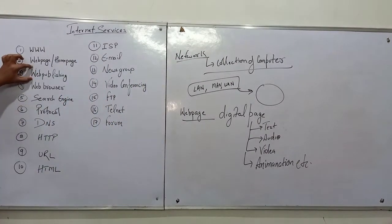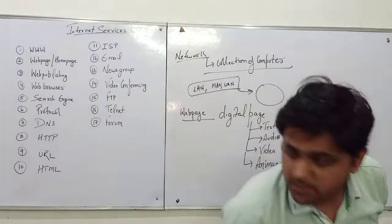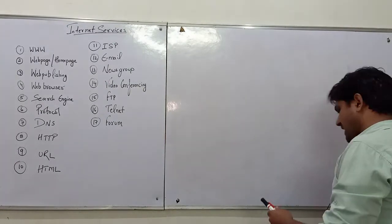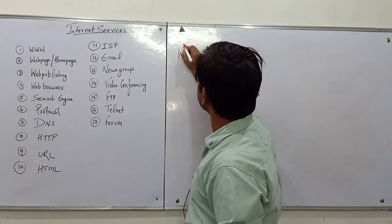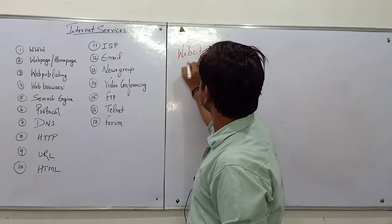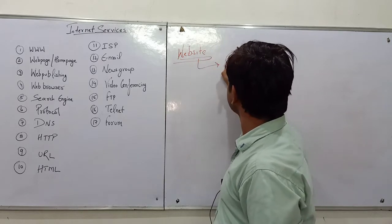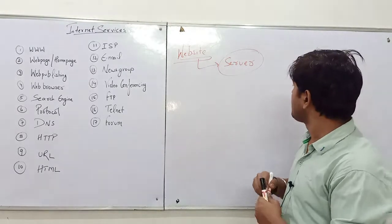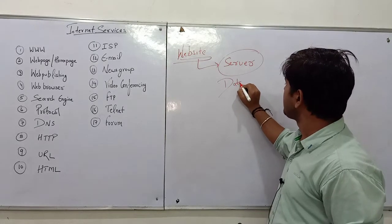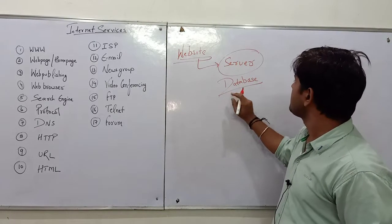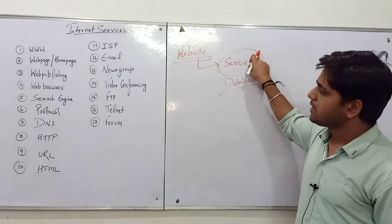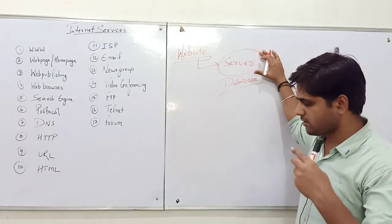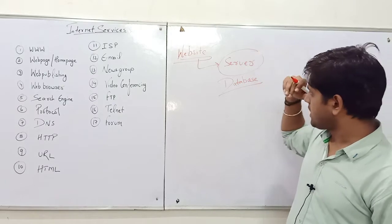Moving to web publishing — web publishing is a process related to hosting of a network. Whenever we create a website or web page, we store it on a server where a database is kept for that website. The area from where it is hosted is known as web publishing. Web publishing is a process from where we can publish a website or a web page.